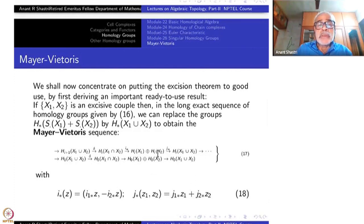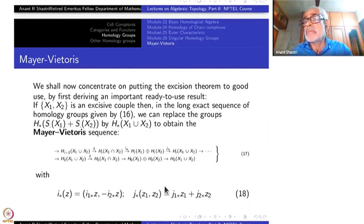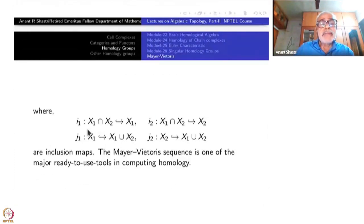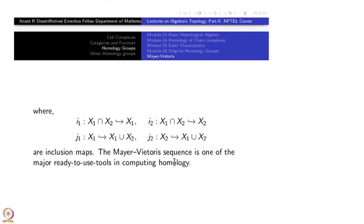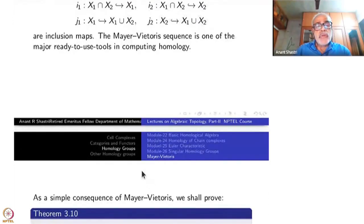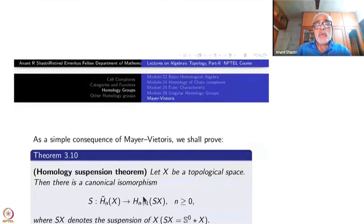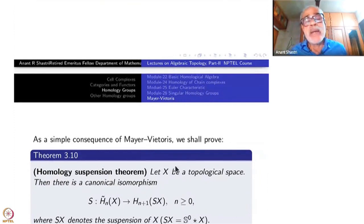Exactness requires plus-minus convention: if you take plus-plus or minus-minus it will not be exact. This long exact sequence is called the Mayer-Vietoris sequence, in honor of Mayer and Vietoris. Eilenberg and Steenrod called it the Mayer sequence. It is one of the major ready-to-use tools in computing homology. As a simple consequence of the Mayer-Vietoris sequence, we are going to prove something further — but that we will do next time; we stop here.